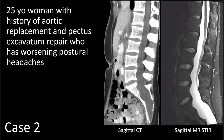Our next case is a 25-year-old woman with history of aortic replacement and pectus excavatum repair who has worsening postural headaches. On the sagittal CT image, we see the concave or scalloped margins of the posterior aspects of L1, as well as L3 through S1 vertebral bodies, as indicated by the black arrows. On the sagittal MR STIR image, we see widening of the dural sac, particularly at the level of the sacrum where the sac is wider than the width of the S1 vertebral body.